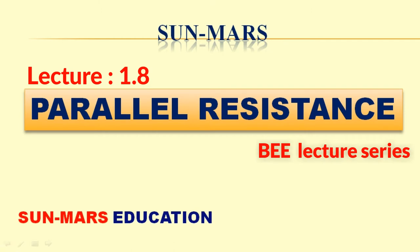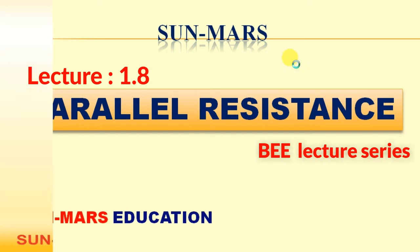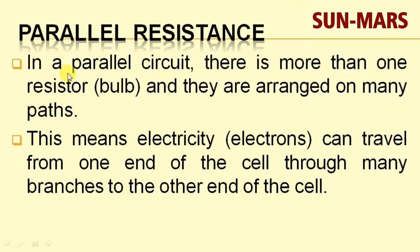We will now see these three relations — voltage, current, and resistance — in parallel resistance. In a parallel circuit there is more than one resistor or bulb, and they are arranged on many paths. In parallel, the connections are parallel to each other.